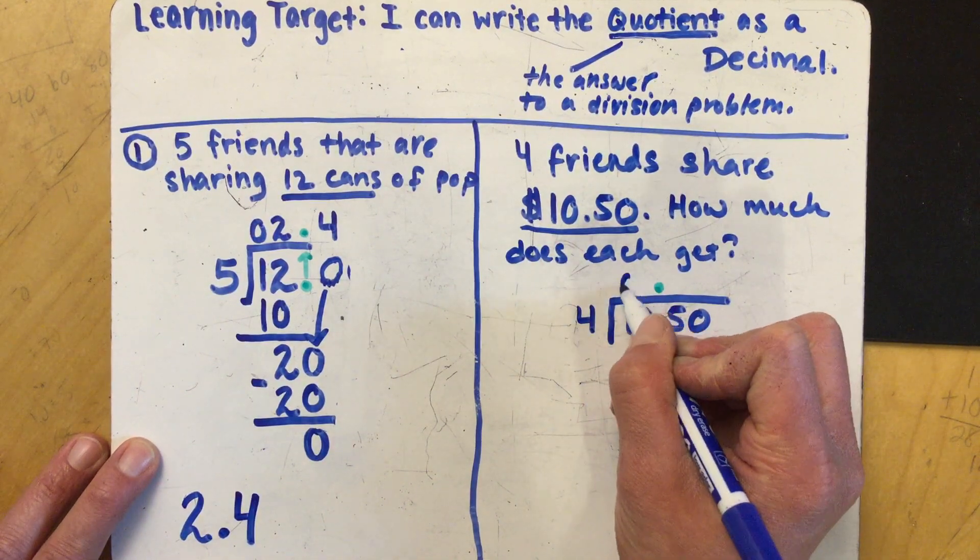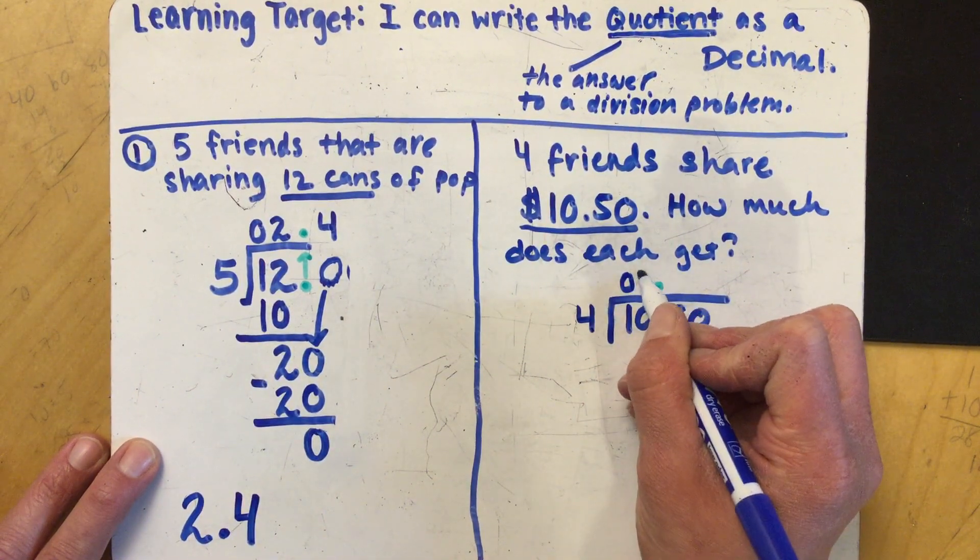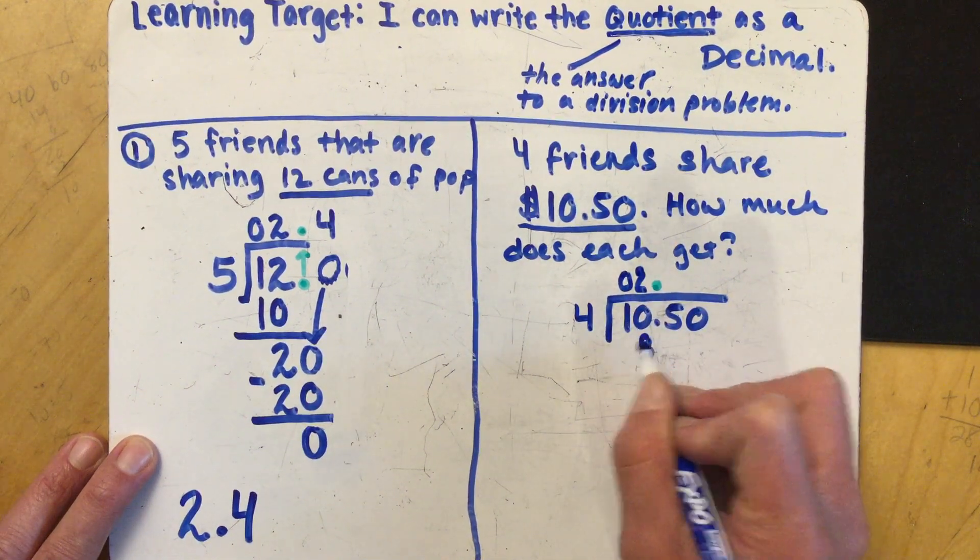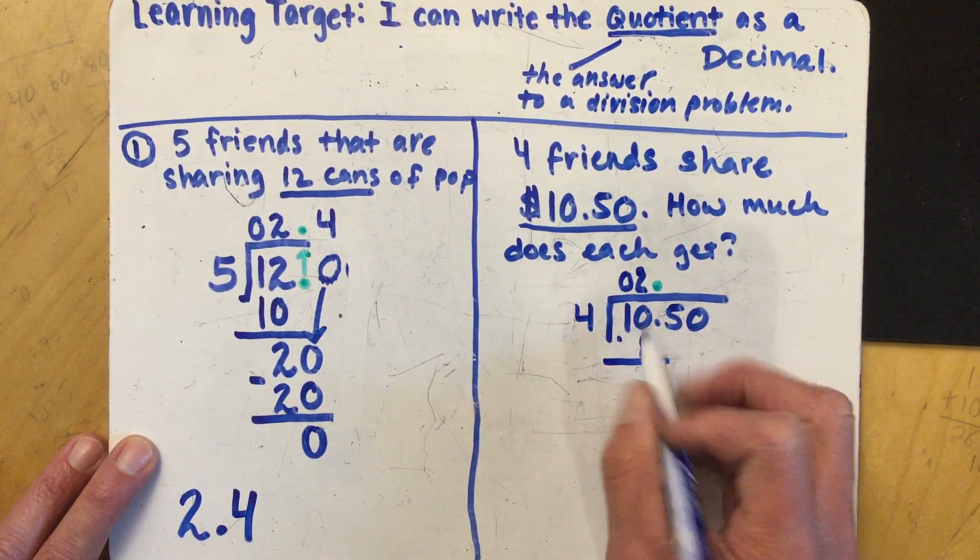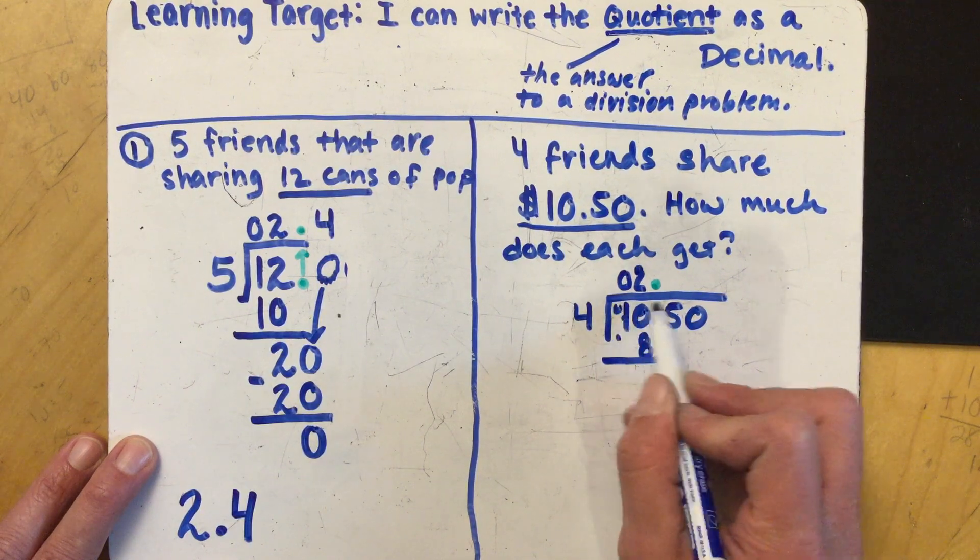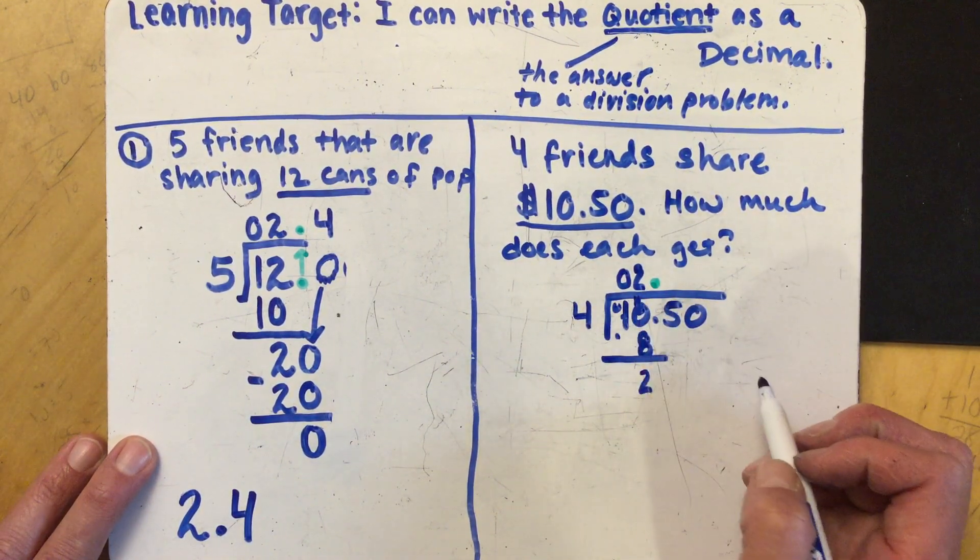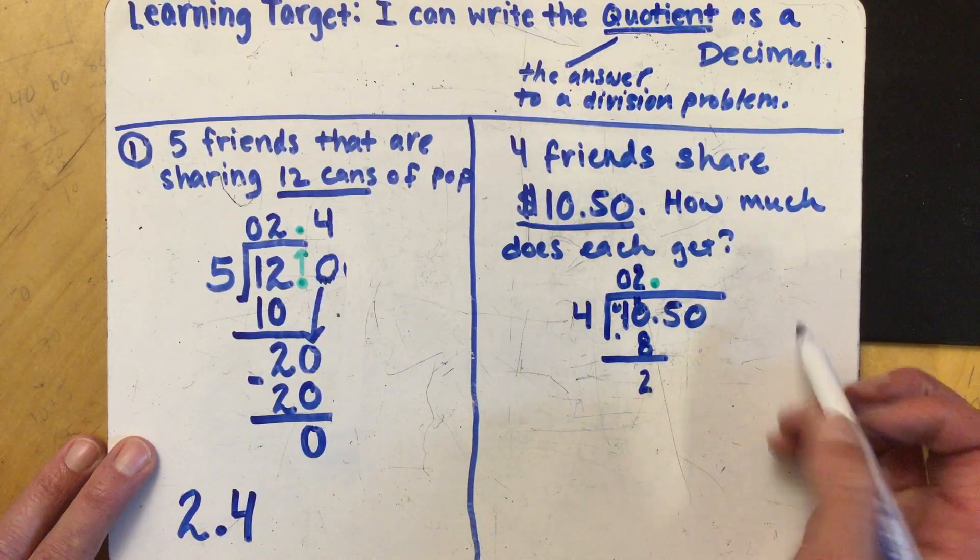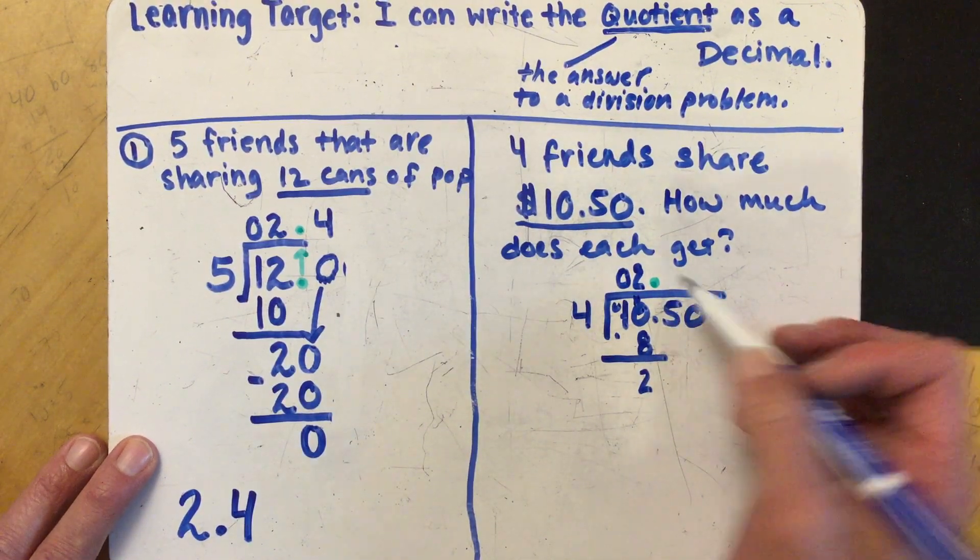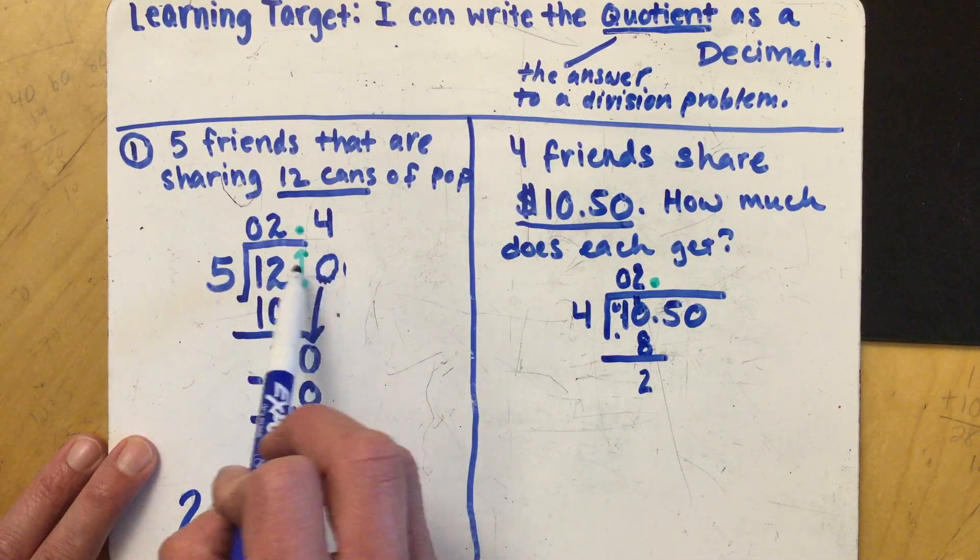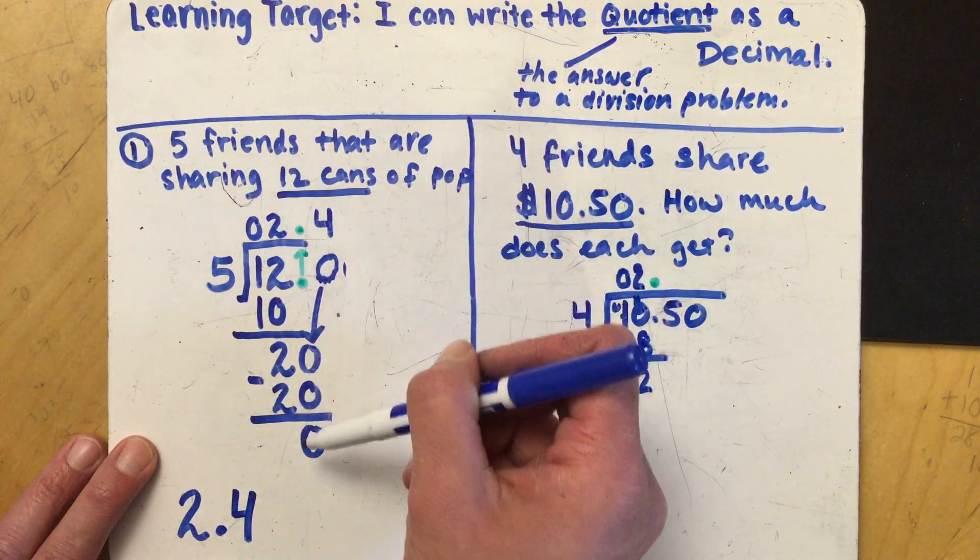Four cannot go into one but four can go into ten two times. So two times four is eight. Be very careful lining that up. If we subtract here we have to borrow so we're gonna get two as a remainder.